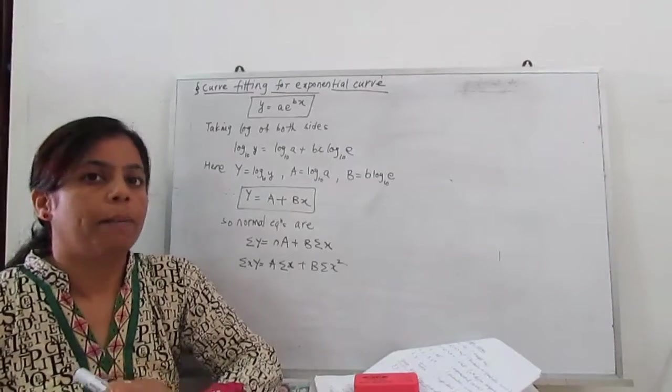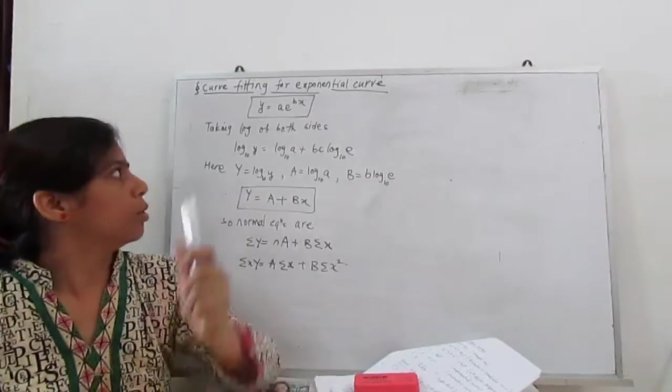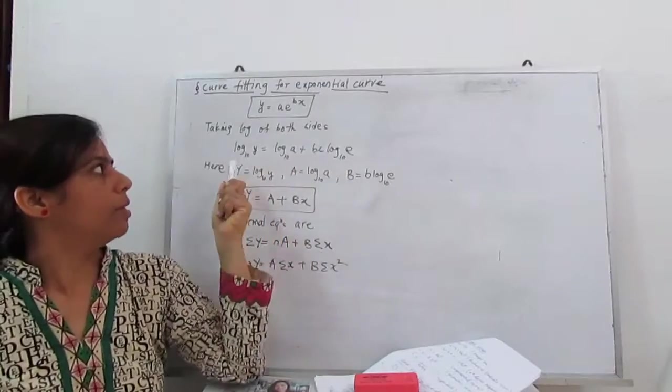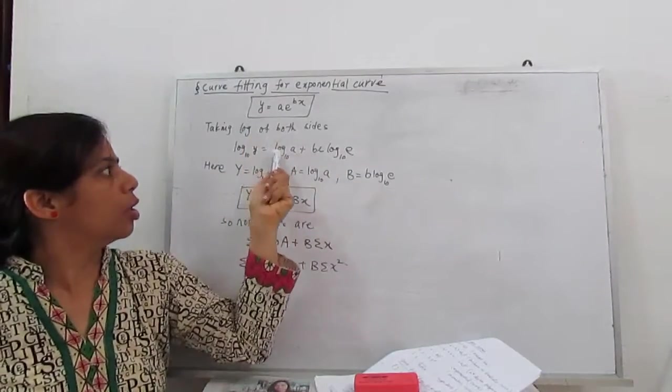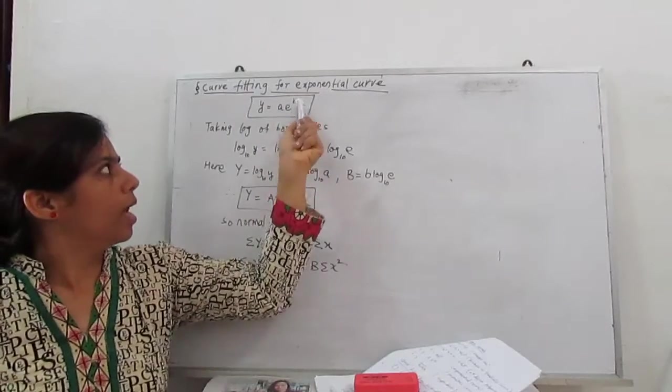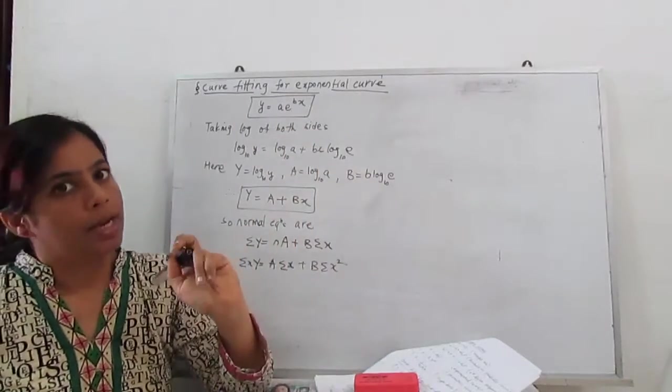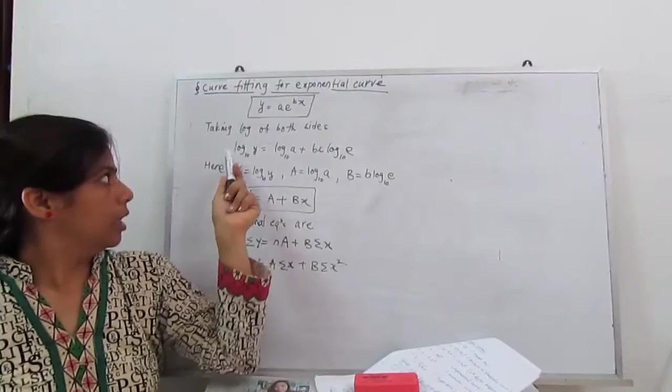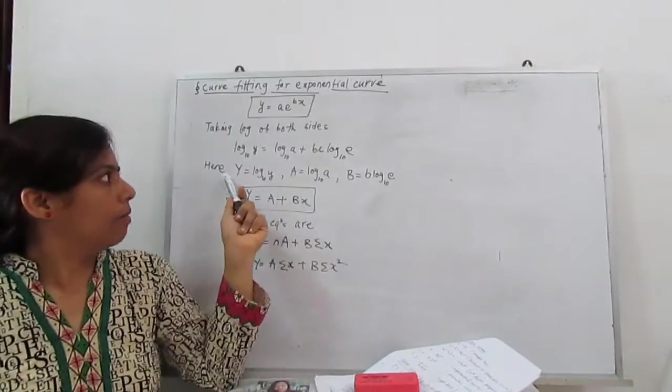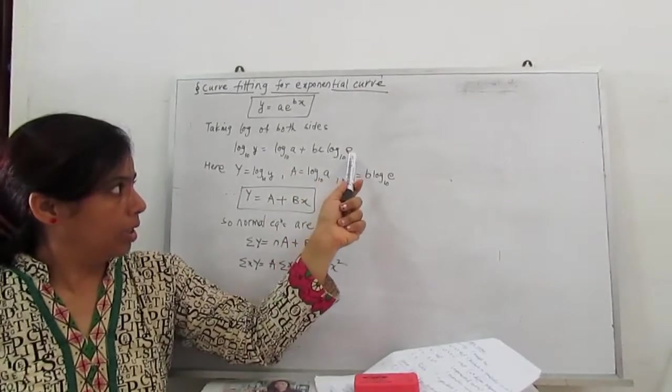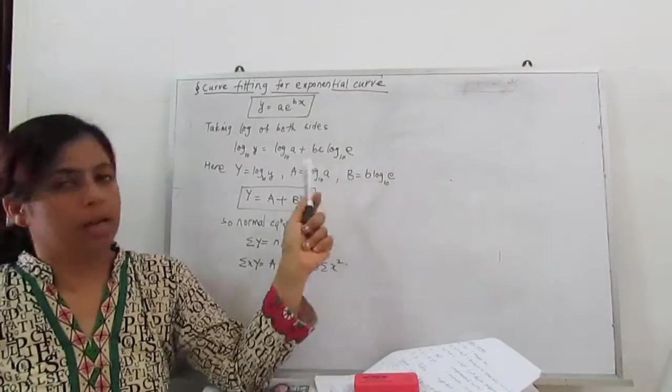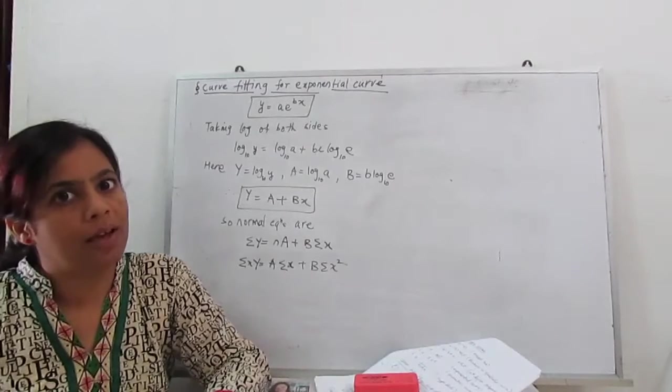For this, the method is very simple. First you take the log both sides with base 10. So log base 10 y equals log a plus bx log of e. Let us consider this is our capital Y, this is our capital A, b log e is our capital B. If we replace these values,